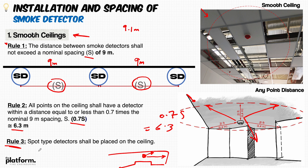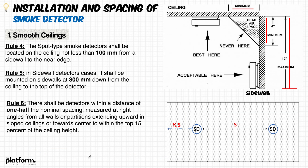All rules are based on the UAE Fire Life Safety Code of Practice 2018. Rule number three: spot-type detectors shall be placed on the ceiling as surface-mounted. If there is a situation where you need to install the smoke detector in a different configuration, it shall be listed and approved for that specific purpose of installation.